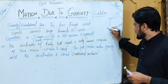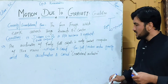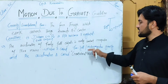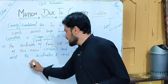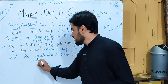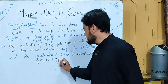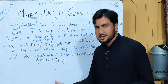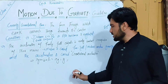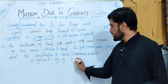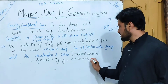The acceleration in free fall is called gravitational acceleration, denoted by the symbol 'g'. The value of g is 9.8 meters per second squared, or approximately equal to 10 meters per second squared.